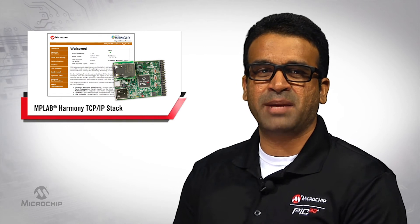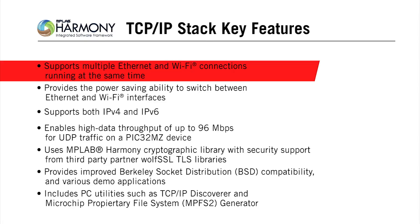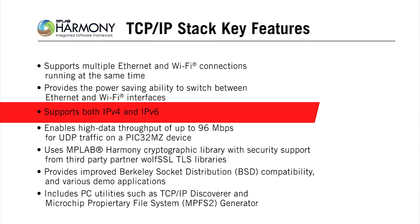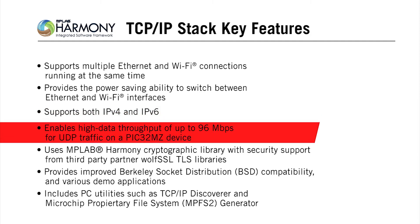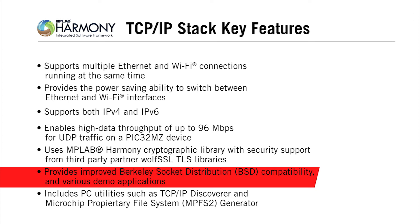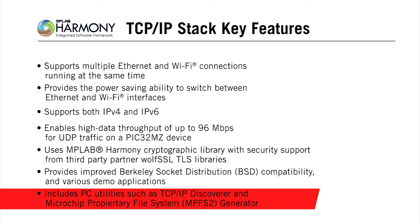Let's go over some of the key features of the MPLAB Harmony TCP/IP stack before we demonstrate a web server using the PIC32 development tools. The stack supports multiple Ethernet and Wi-Fi connections running at the same time and provides the ability to conditionally switch between Ethernet and Wi-Fi interfaces for power savings. It supports both IPv4 and IPv6 and enables high data throughput of up to 96 Mbps for UDP traffic on a PIC32MZ. It uses the MPLAB Harmony cryptographic library and provides strong security with the support of third-party partner WolfSSL's TLS libraries. The stack also provides improved BSD compatibility, various demo applications, and PC utilities such as TCP/IP Discoverer and Microchip's proprietary file system MPFS2.